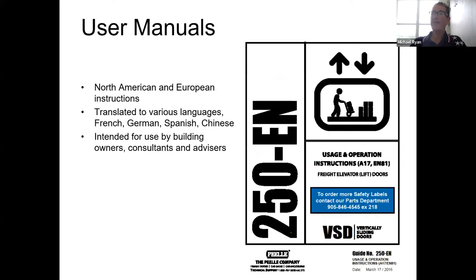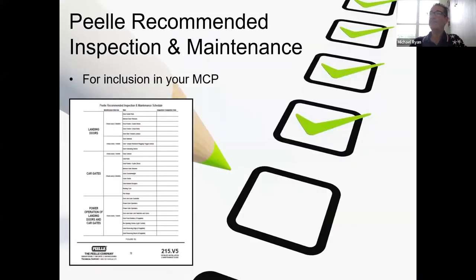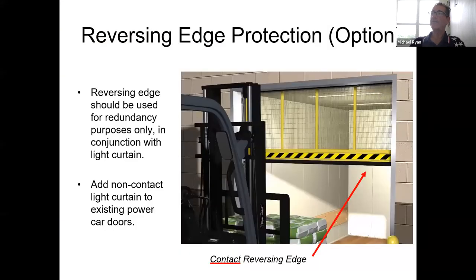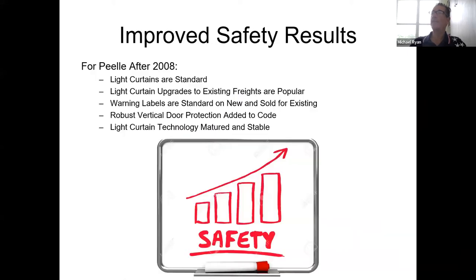Our manuals, if you have an environment where people speak other than English, are available in French, German, Spanish, and Chinese. We provide an inspection and maintenance checklist to ensure you're looking at the right items. Although the reversing edge — older technology that had to make physical contact — has been replaced by light curtains and the protector, which are far safer, the reversing edge is still available. Some people like it for redundant safety, so that's still an option today.